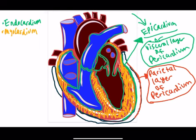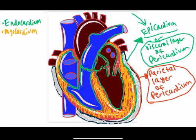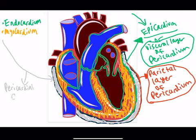Now let's talk about the gap between the visceral layer of the pericardium and the parietal layer of the pericardium. This gap between the epicardium and the parietal layer of the pericardium is going to be called the pericardial cavity, or sometimes also called the pericardial sac. And this gap isn't empty — it has serous fluid in it.